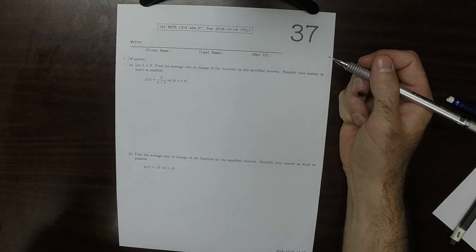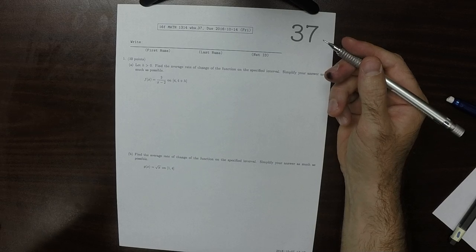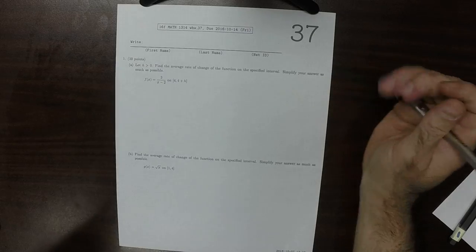This is the solution to written homework 37. We have a positive H. Find the average rate of change.